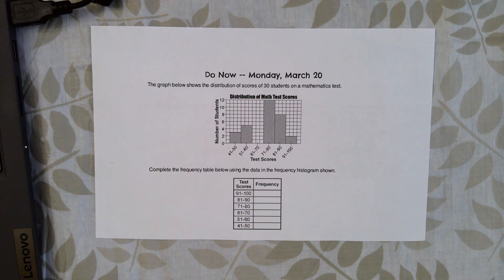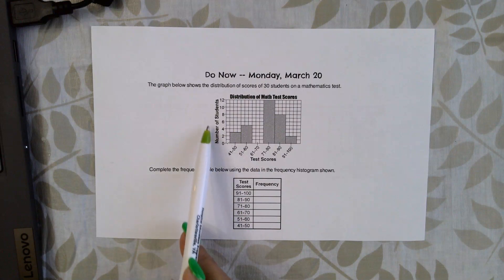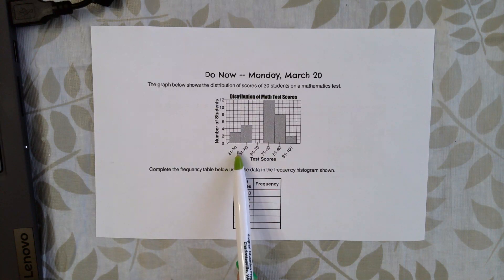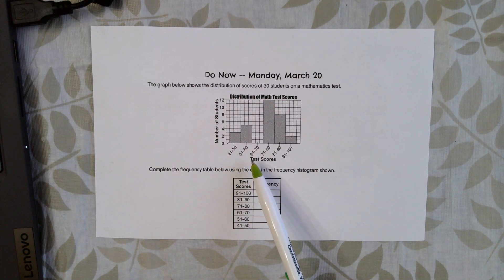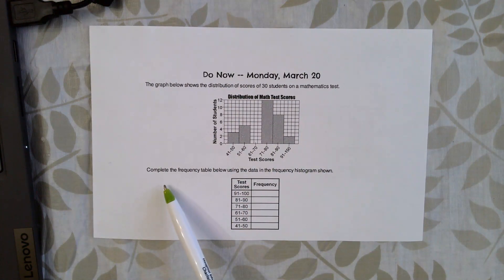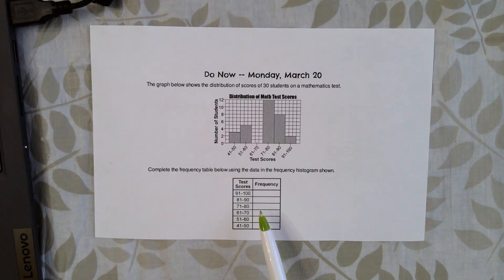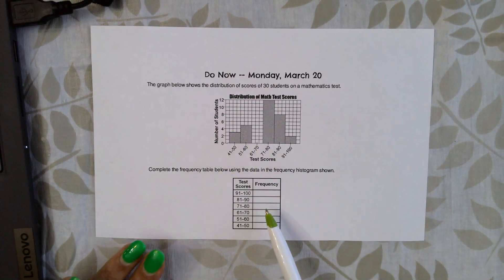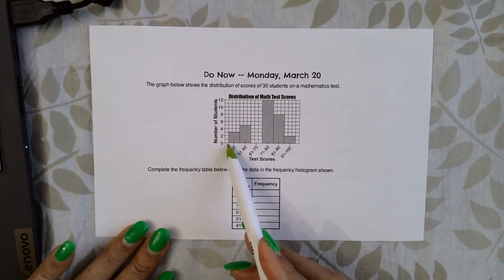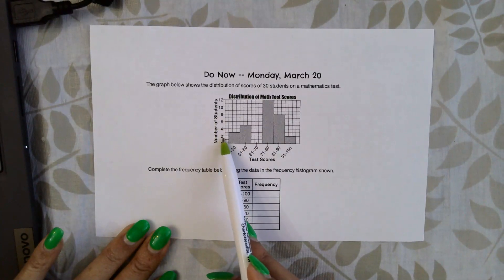Let's look at the do now with the histogram. It says the graph below shows the distribution of scores of 30 students on a mathematics test. Remember, this side is the frequency, and these are the test scores broken up into equal intervals: 41 to 50, 51 to 60, 61 to 70, 71 to 80, 81 to 90, and 91 to 100. We have to go back to the histogram to fill out the frequency table. The first thing to do is look at each interval's frequency — this scale is counting by twos.